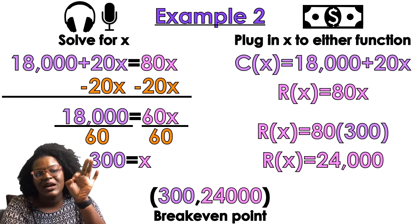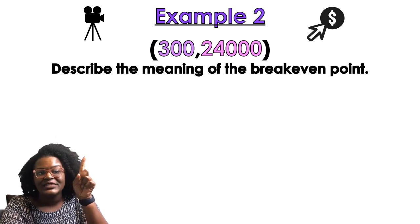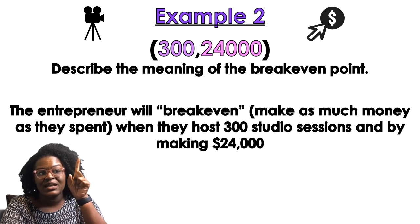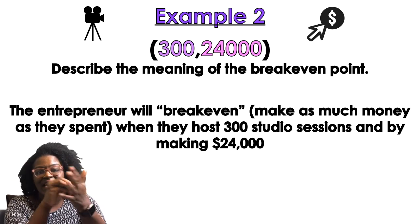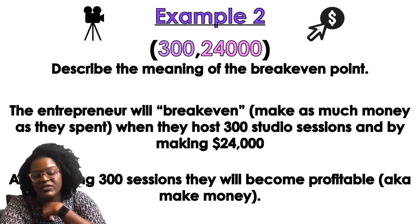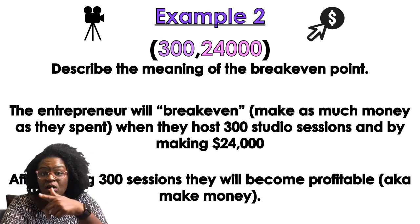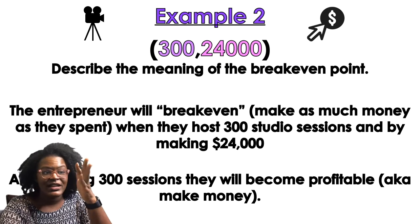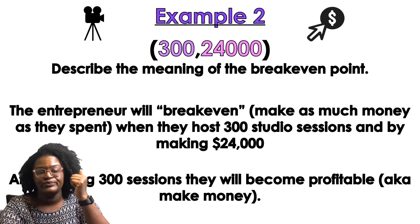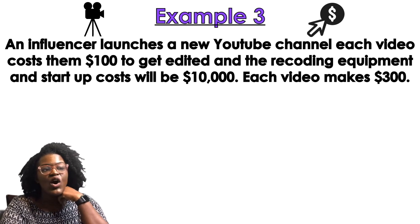It will take 300 studio sessions and making $24,000 to break even — to get back the money put into the company. After 300 sessions, the studio will become profitable. So all you future music producers out there, this is the kind of stuff you've got to figure out: how much money are you going to save to start your studio?